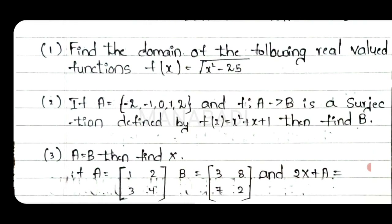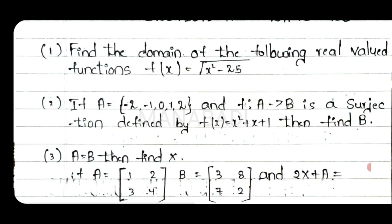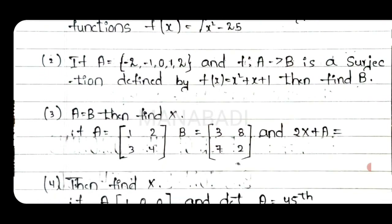Next, if A is equal to values minus 2, minus 1, 0, 1, 2, then find the B value. We have A values. Equation 2x plus A is equal to... the equation is based on you. We have x value. A equals to B — find x if A matrix equals B matrix and 2x plus A equals 2.